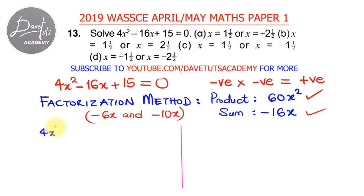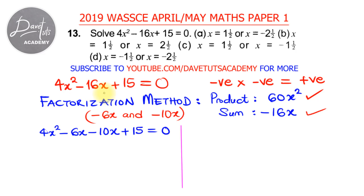We rewrite 4x squared minus 16x plus 15 equals 0 as 4x squared minus 6x minus 10x plus 15 equals 0. This is consistent because minus 6x minus 10x is the same as minus 16x, and this is the key step in the factorization method.